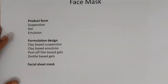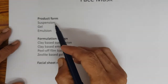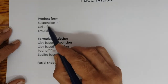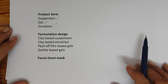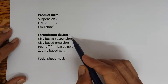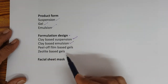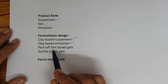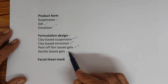What are the product forms? A face mask can be a suspension, a gel, or an emulsion. Formulation design can be a clay-based suspension, clay-based emulsion, peel-off films, film-based gels, or zeolite-based gels.